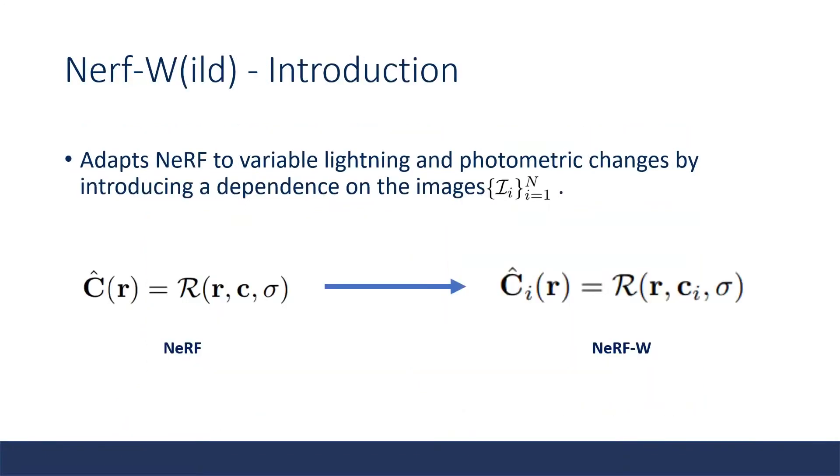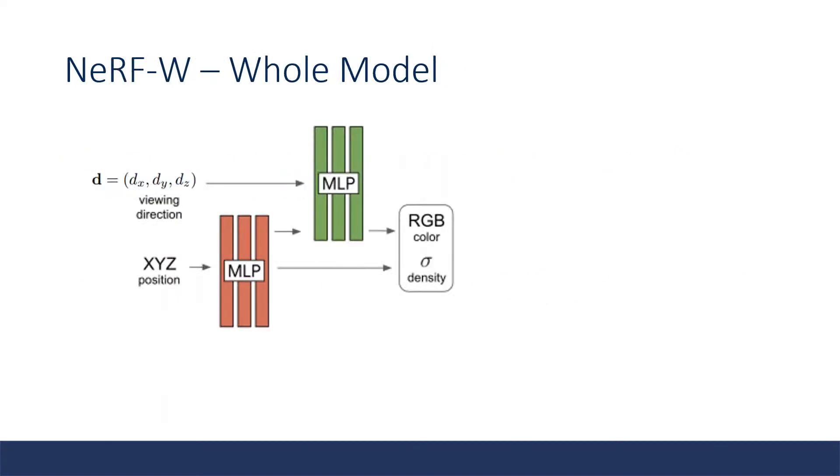This paper, NeRF-W, adapts NeRF to variable lighting and photometric changes by introducing a dependence on images, represented using the subscript i. We can first look at the NeRF model: given a viewing direction and a position in space, we obtain the color and density. However, like we stated before, we cannot assume that the same 3D position and viewing direction will result in the same color and density for different images.